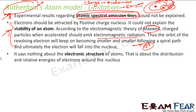Also, the Rutherford model didn't say anything about the electronic structure of the atom. There is absolutely no discussion about the electronic structure of the atom. The atom will have different numbers of protons and electrons — protons were known — but the atomic structure was not known. So this had its own limitation.